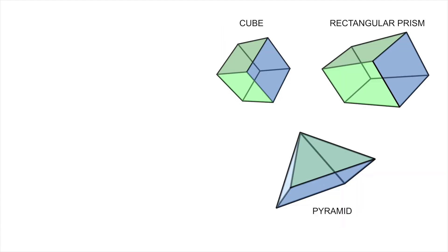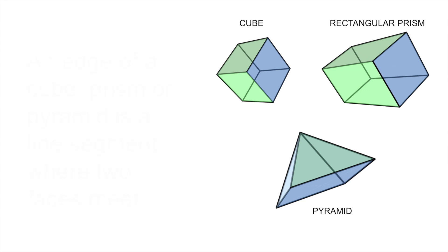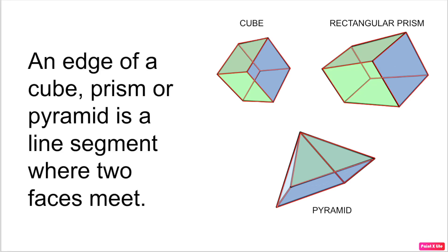Here we have a cube, rectangular prism, and pyramid. What do you notice about these shapes? I notice that all these shapes have edges, where two faces meet, like in this clip here.